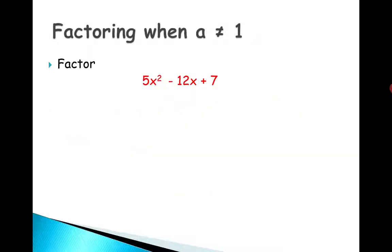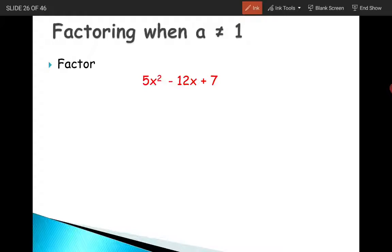Now let's say we try taking something out and nothing comes out. We're faced with a trinomial where the first term is 5x squared. We know it factors into two binomials. Instead of x and x, one must be 5x and the other x. This is where you have to be a little savvy.